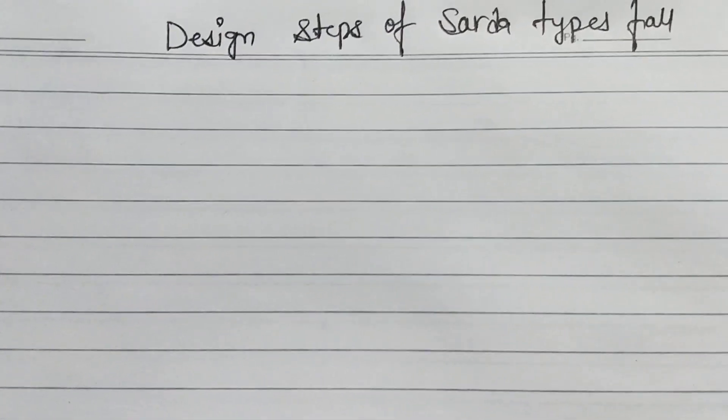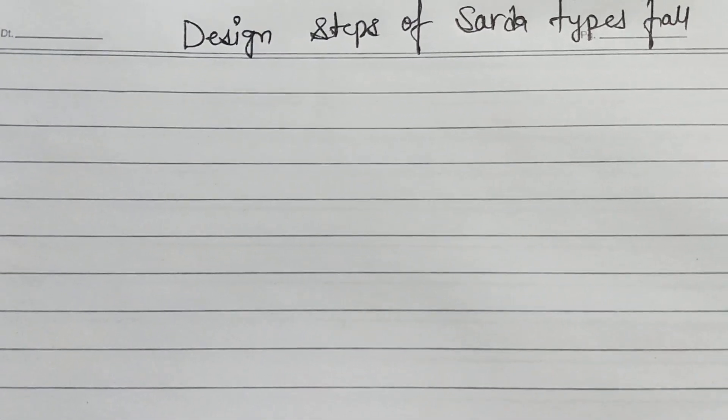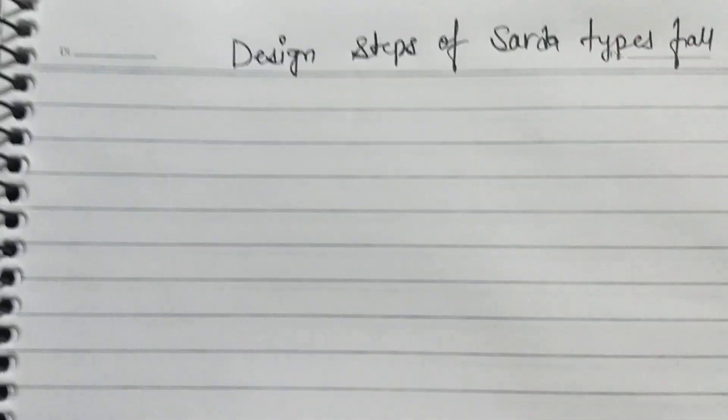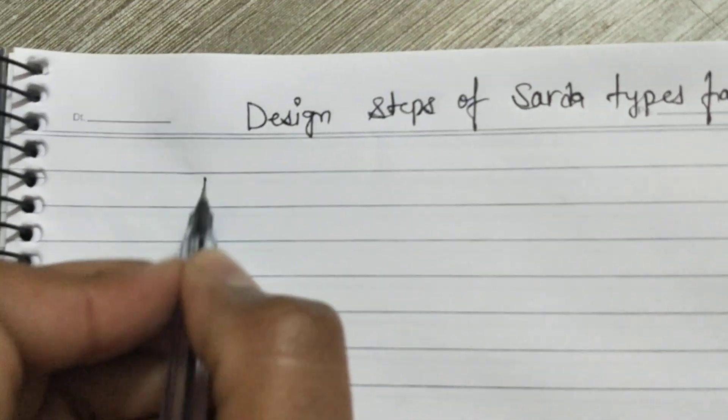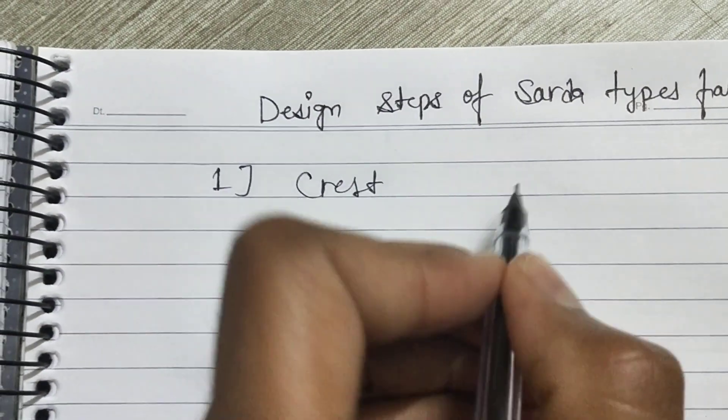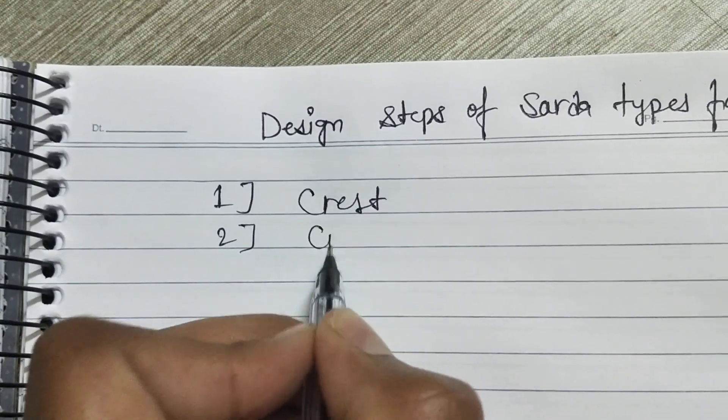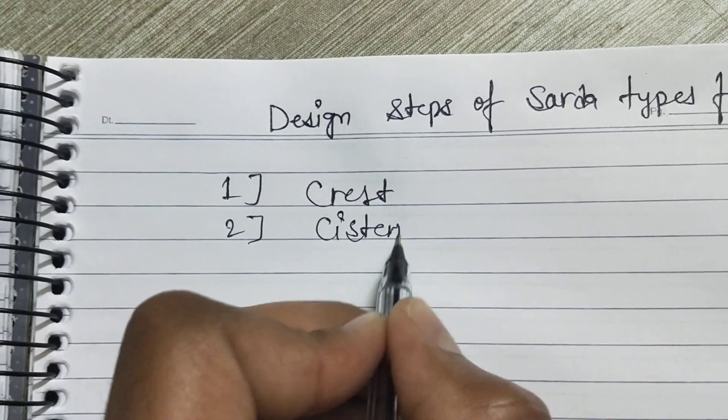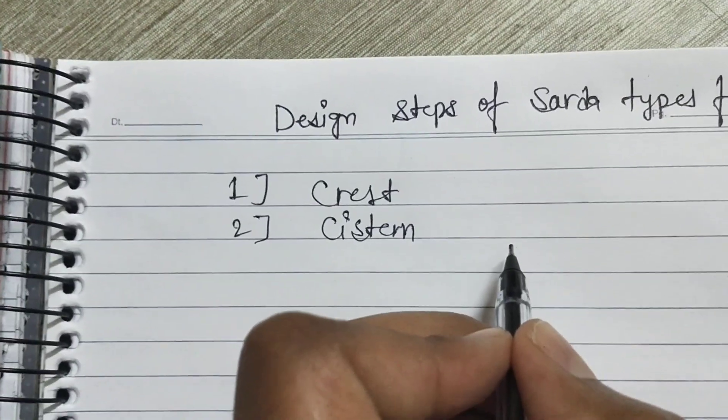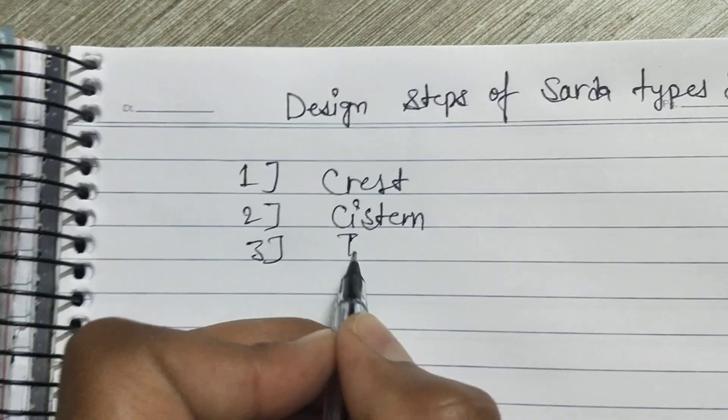The complete design consists of the following component parts which are: first is crest, that means Sikha or Choti; and second, cistern, that means Tanki; and third, impervious floor.